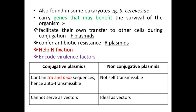When bacteria contain plasmids carrying genes for antibiotic resistance, even in the presence of that antibiotic in the medium the bacterium will be able to grow. If there is no such plasmid, the bacterium will be killed. So special properties are conferred to bacteria by genes located in the plasmids.